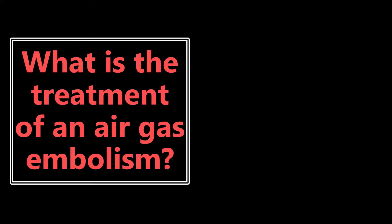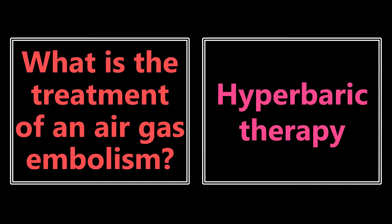What is the treatment of an air gas embolism? They love these scuba diving questions on the exam. The treatment for an air gas embolism is hyperbaric therapy. The reason is twofold: it not only reduces the volume of bubbles, but it also allows them to reenter solution. So any bubbles causing stroke-like symptoms will be made smaller and allowed to reenter solution, which should improve the patient's symptoms.